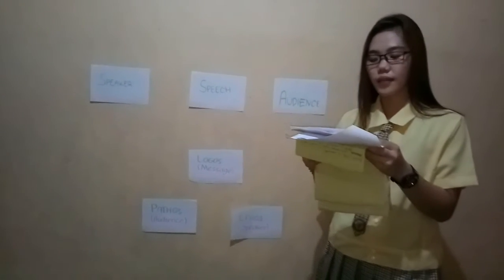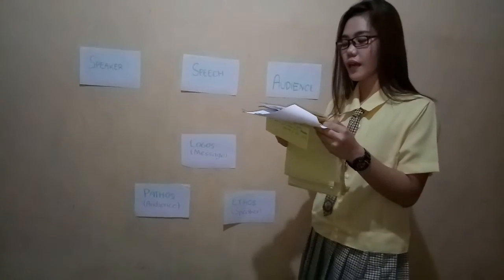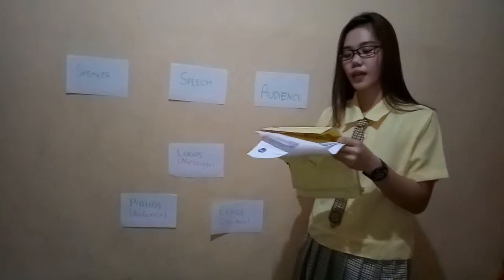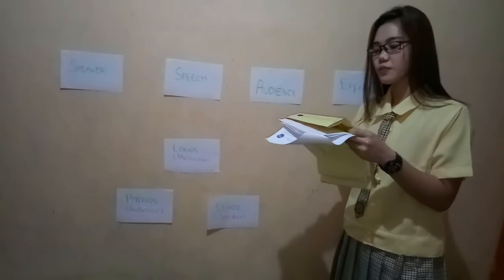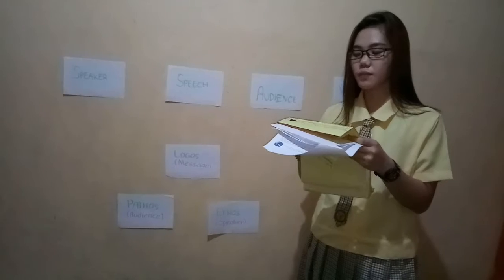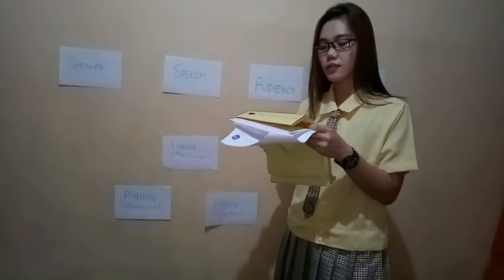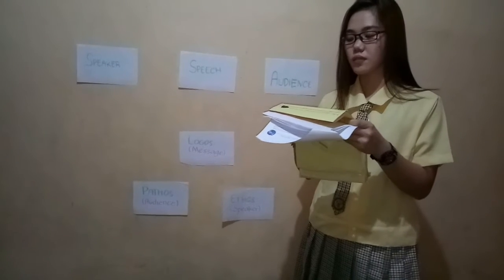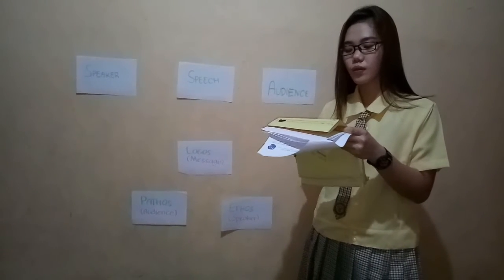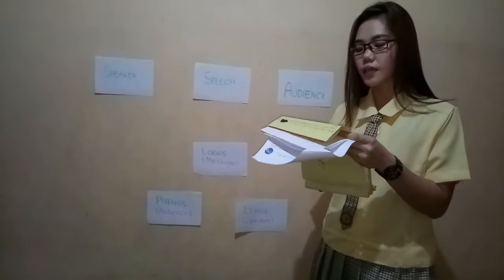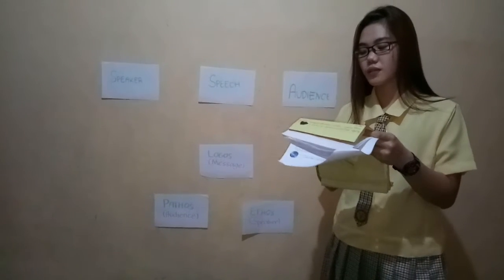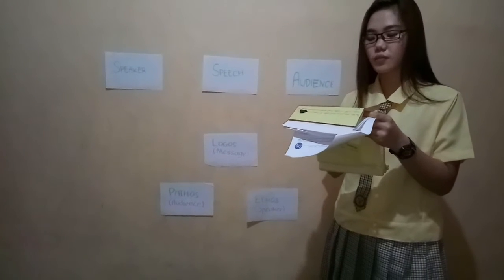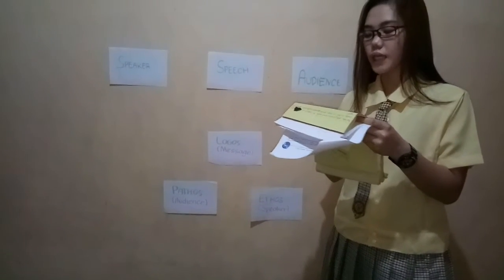It can be broadly divided into five primary elements: speaker, speech, occasion, audience, and effect. Aristotle proposed this model before 300 B.C., recognizing the importance of the audience's role in the communication chain. It is more focused on public speaking than interpersonal communication, and the speaker should influence the audience's mind and persuade their thoughts toward him.